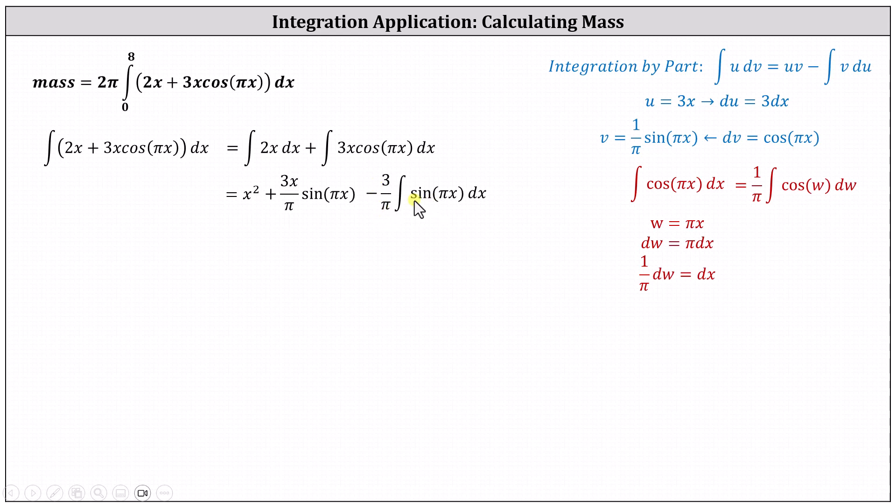Now we need to integrate sin(πx) dx, which is very similar to how we integrated cos(πx) dx. We end up getting an extra factor of π in the denominator. Integrating, we get -(3/π) times the antiderivative of -(1/π)cos(πx),